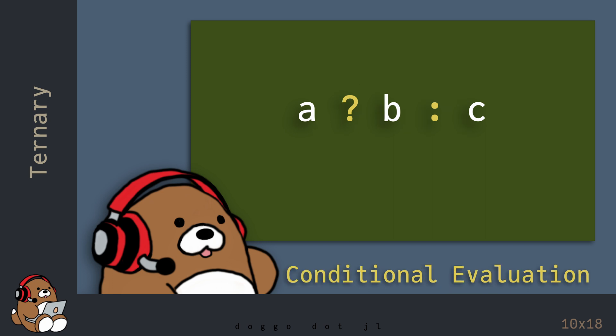Using the ternary operator is another example of conditional evaluation. The behavior of the ternary operator is just like the if expression from the last chapter, only the syntax is very different. Let's take a look at an example.